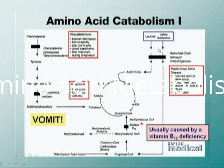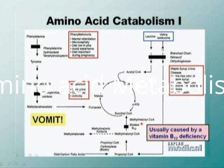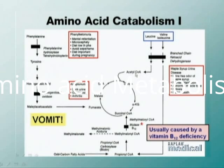Leucine is a ketogenic amino acid — it gets converted to acetyl-CoA. Valine is a glucogenic amino acid and can be converted to sugar. Isoleucine can go in either direction. These are smaller details that are less commonly tested on boards nowadays.